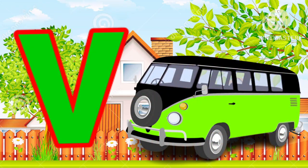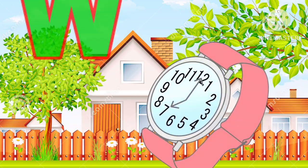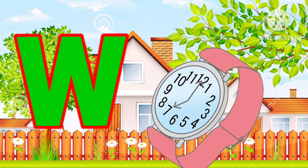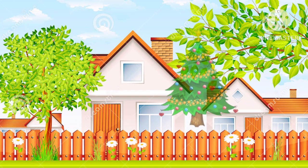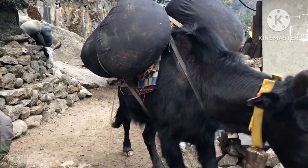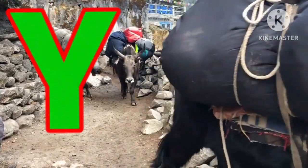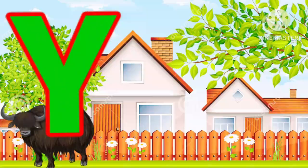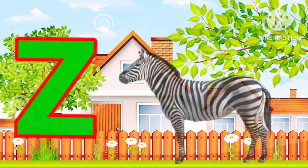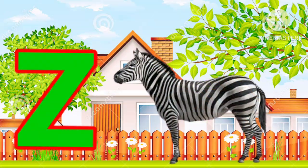V for lamp, W for watch, X for atmosphere, Y for yard, Z for zebra.